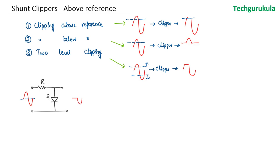When input voltage Vi is greater than zero, D1 is on, which means it acts as a short circuit. When it is a short circuit, the output voltage V0 will be zero. So during the positive half of the cycle, the output voltage is zero.